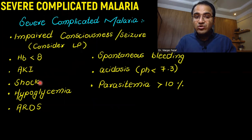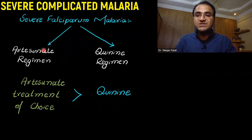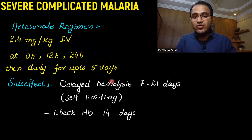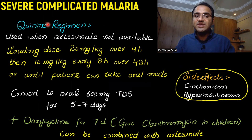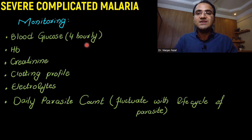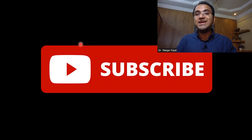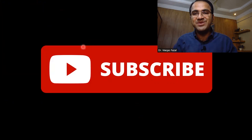In summary, we talked about the presentation of severe complicated falciparum malaria, poor prognostic factors, and the two treatment regimens — artesunate being preferred, with quinine as an alternative. Artesunate is given IV with delayed hemolysis as a side effect. Quinine is combined with doxycycline, with side effects of cinchonism and hyperinsulinemia. Monitor glucose and all parameters regularly. If you liked this video, please subscribe and check out the other videos on infectious medicine and emergency medicine playlists linked in the description below.